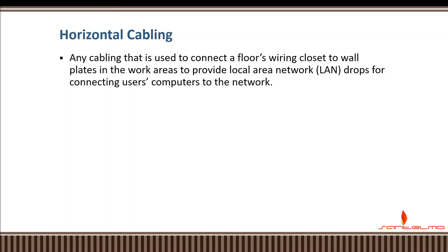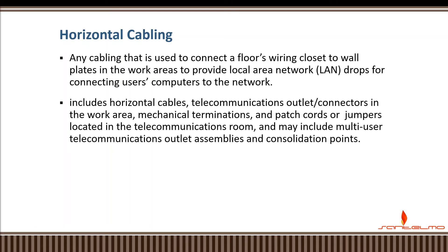Next is horizontal cabling. Horizontal cabling is any cabling used to connect a floor's wiring closet to wall plates in the work area, to provide local area network drops for connecting users' computers to the network. This includes horizontal cables, telecommunications outlets or connectors in the work area, wall patch connections or wall outlets, mechanical terminations, and patch cords or jumpers located in the telecommunications room, and may include multi-user telecommunications outlet assemblies and consolidation points.